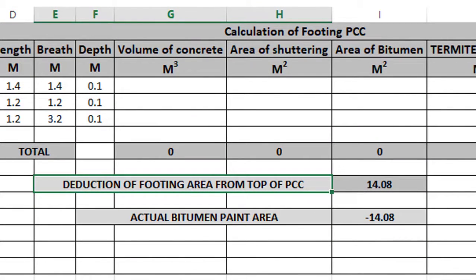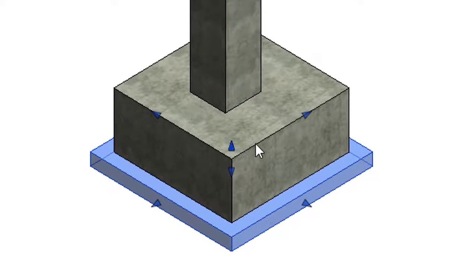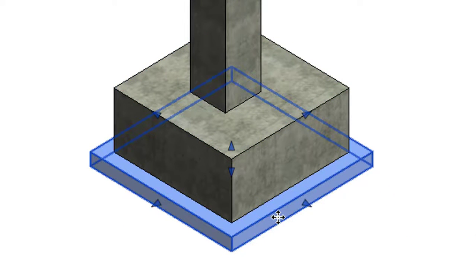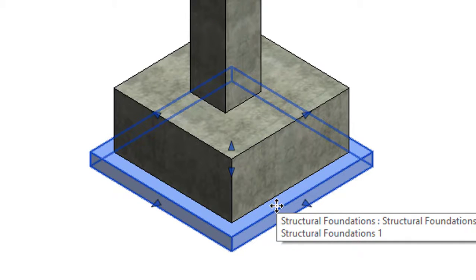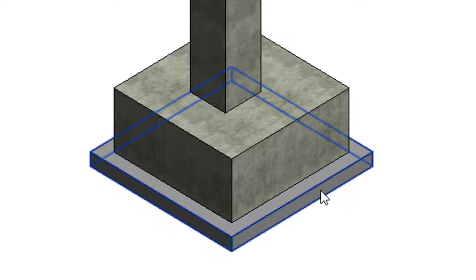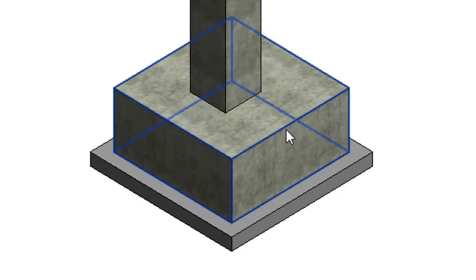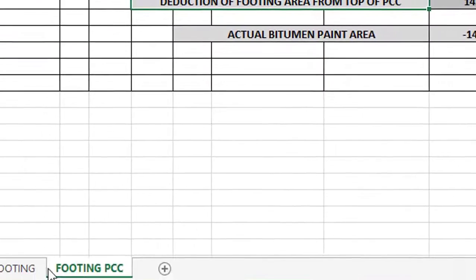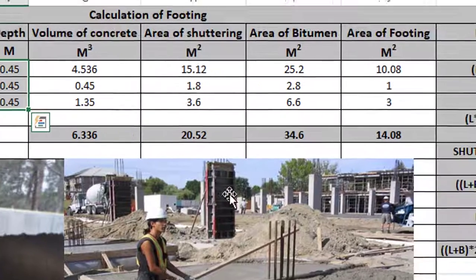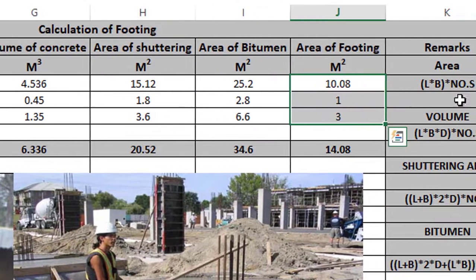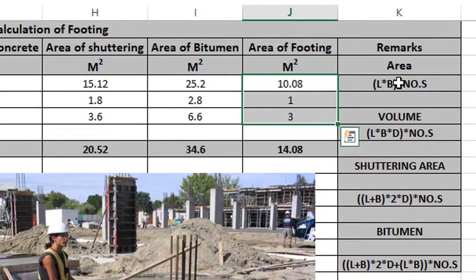The bitumen paint area calculated is after deduction of the footing area. We are calculating the total top area of footing PCC. Footing PCC top area is calculated, but the footing PCC needs a footing sitting on top, so the footing area is deducted. So first we are calculating the footing area using the formula L into B into Numbers.